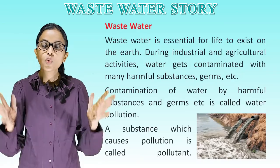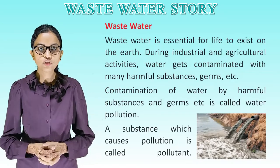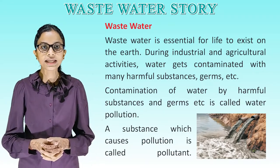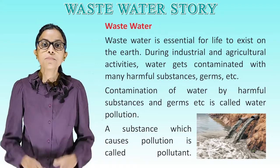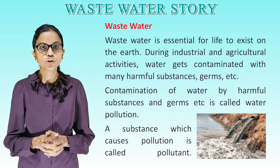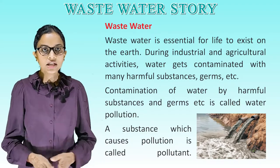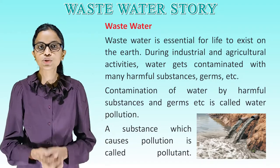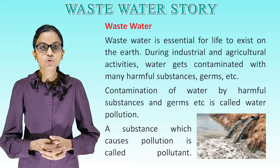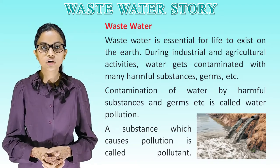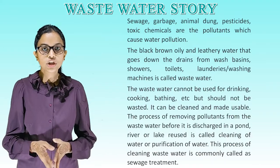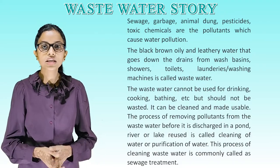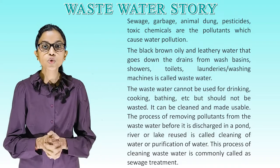Wastewater: wastewater is essential for life to exist on the earth. During industrial and agricultural activities, water gets contaminated with many harmful substances, germs, etc. Contamination of water by harmful substances and germs is called water pollution. A substance which causes pollution is called a pollutant. Sewage, garbage, animal dump, pesticides, and toxic chemicals are pollutants which cause water pollution.